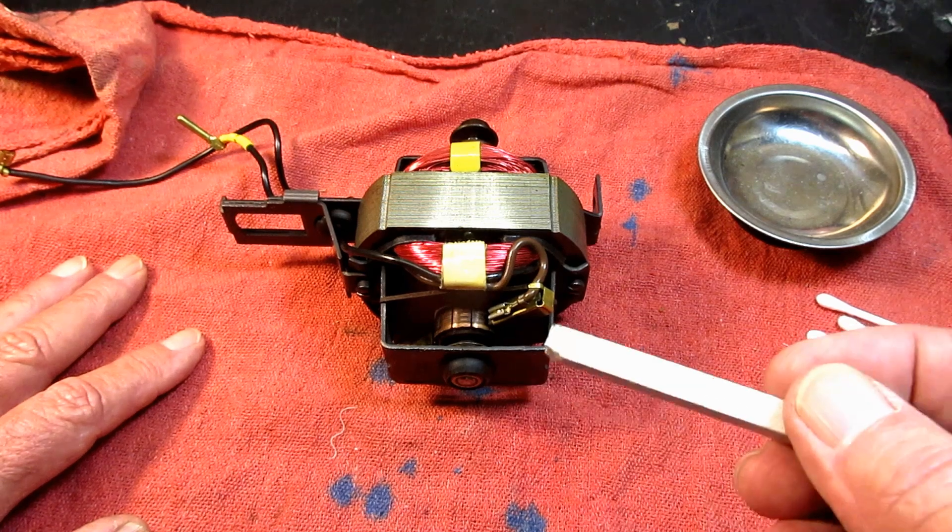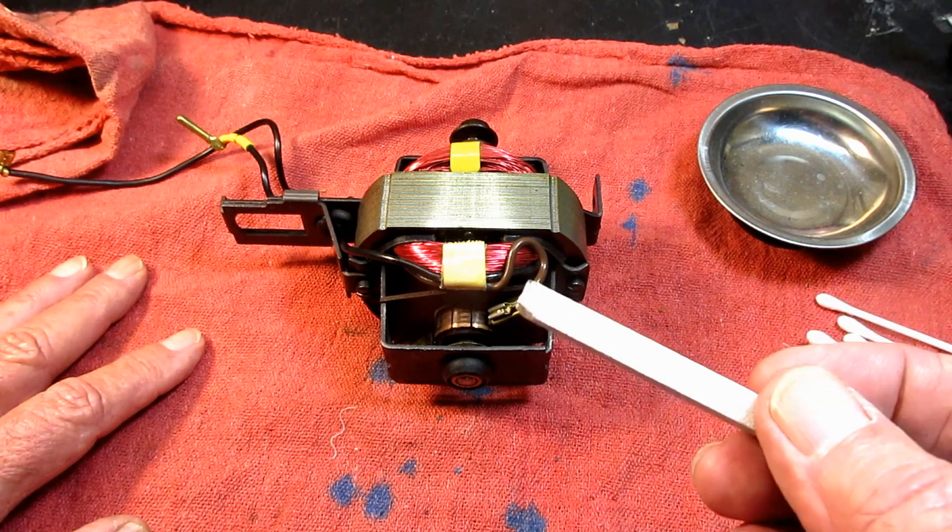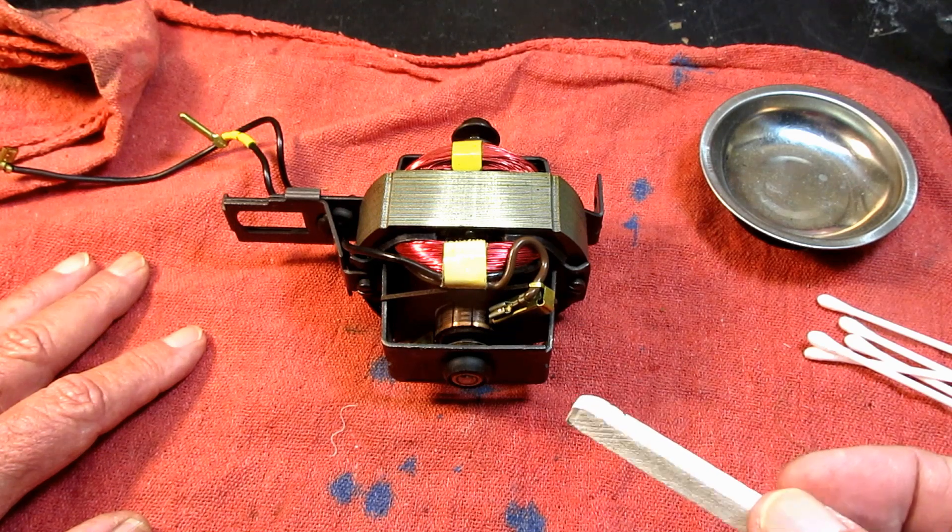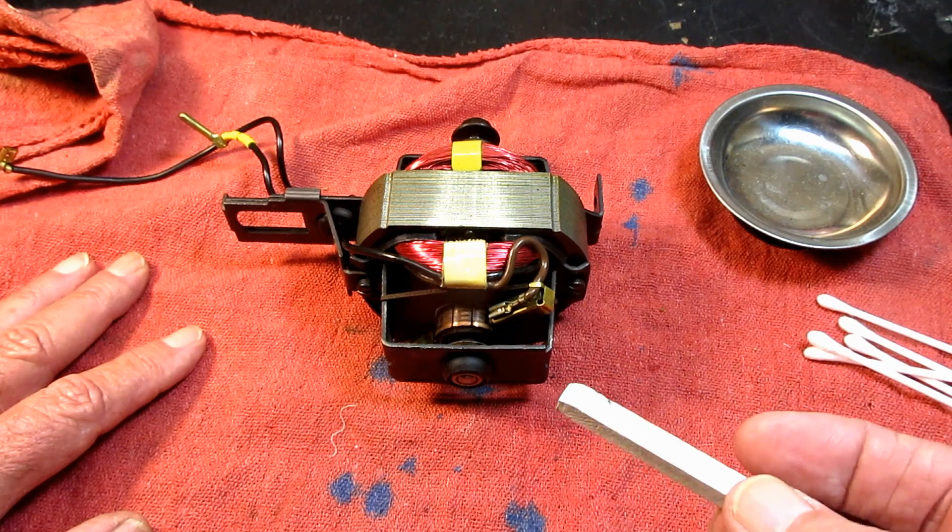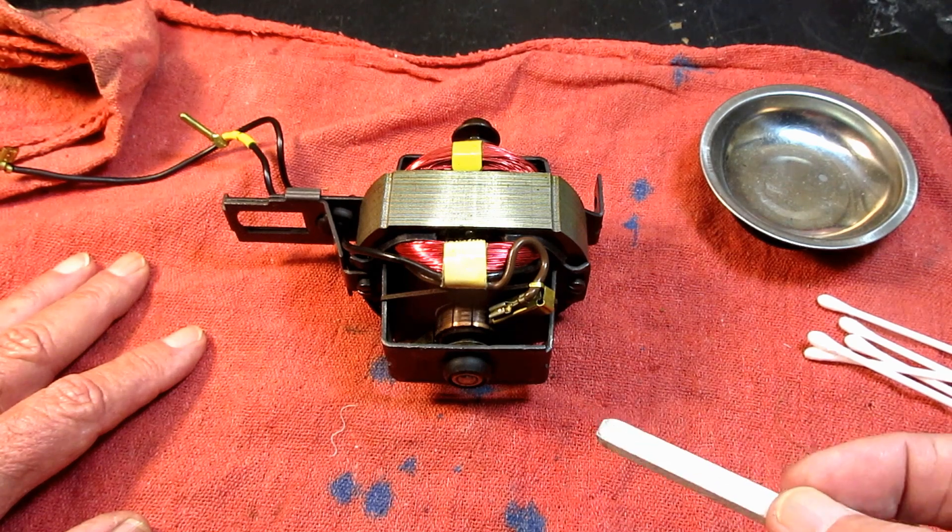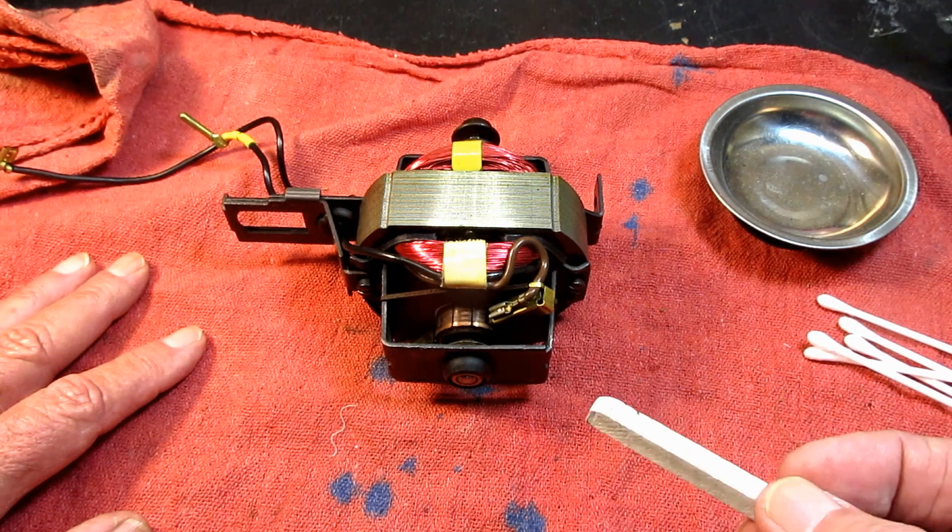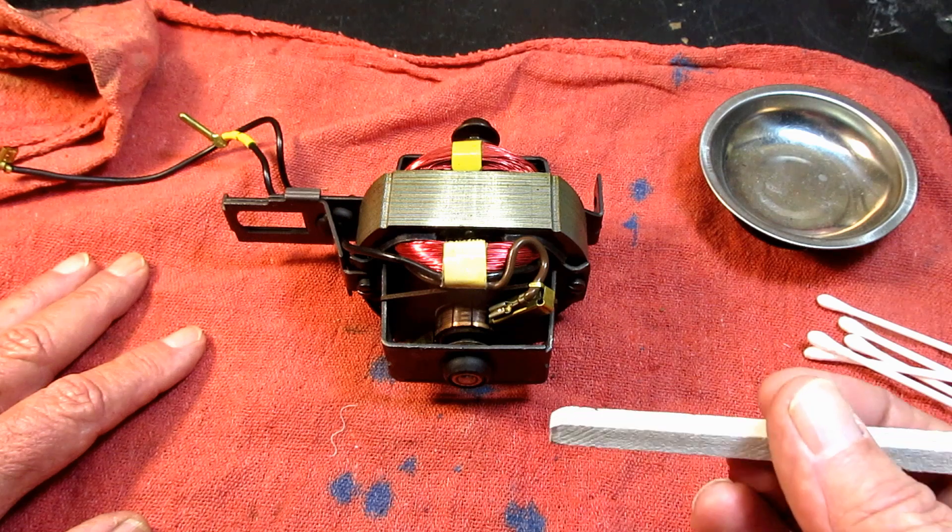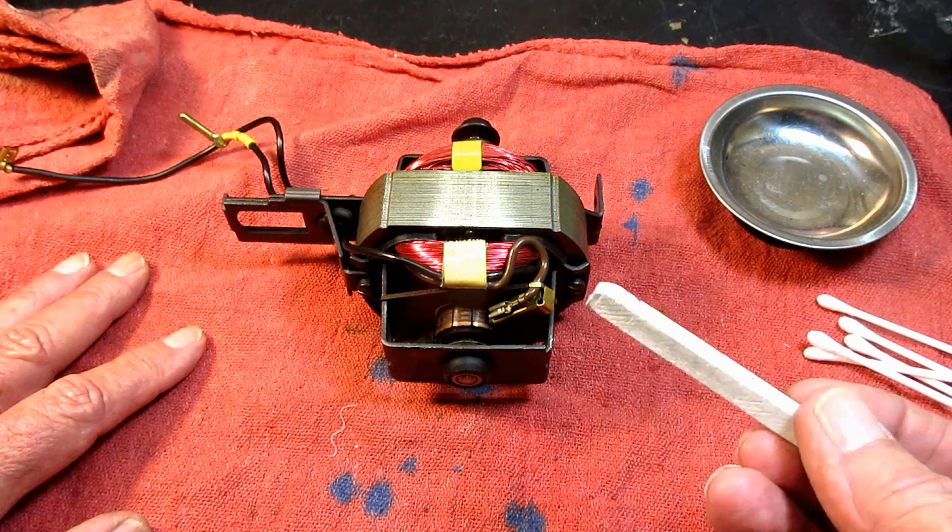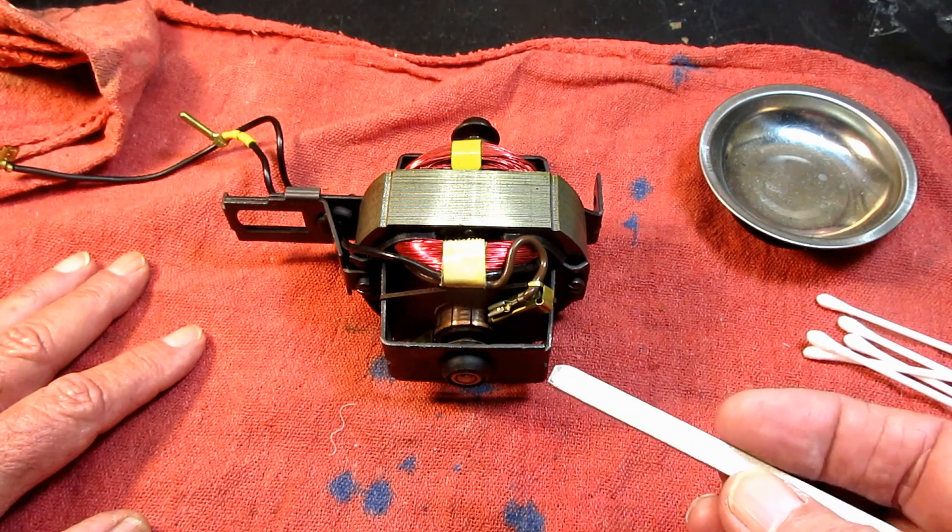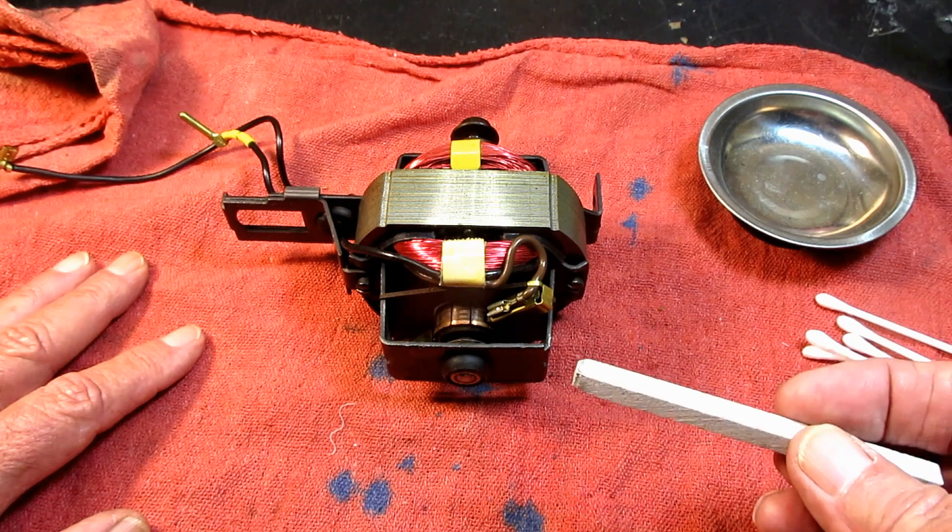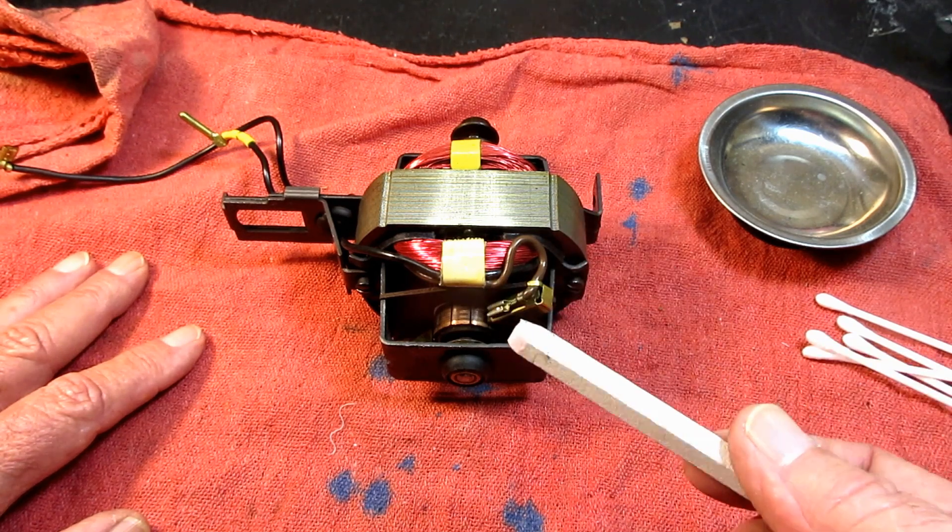This is a small one I found online for 10 bucks and they come in all different sizes and they can be used on all kinds of commutators. In the description below the video I'm going to put a link to a catalog I found about these kind of stones and the different grades and coarseness and so forth. And I'll put a link to where I bought this one.